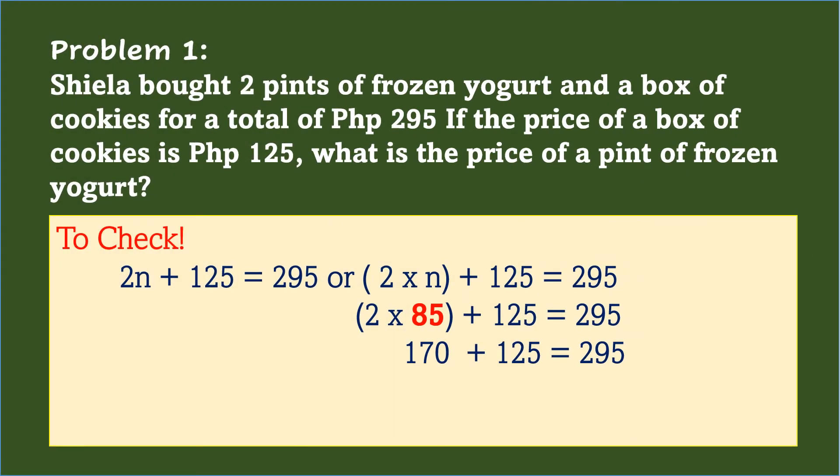To check if the answer is correct, write the original equation while replacing the variable with the answer. So 2n plus 125 equals 295, or 2 times n plus 125 equals 295. Replacing n in 2 times n is 2 times 85, which is equal to 170, which is the price of the two pints plus 125, which is the price of a box of cookies, is equal to 295. This means the answer 85 pesos, as the price of a pint of frozen yogurt, is correct.